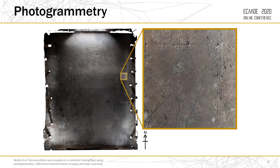To survey the tracing floor we first looked at photogrammetry. This involved taking hundreds of photos from different angles, which were then processed using Agisoft Metashape. Metashape produced a 3D point cloud model of the surface from which we could extract a 2D ortho mosaic. The results are visible here, and the highlighted box on the right demonstrates the level of detail we could achieve.